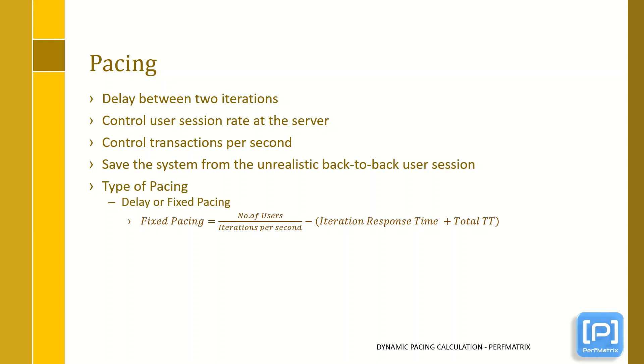The second type of pacing is interval or dynamic pacing. Practically, we cannot calculate dynamic pacing directly due to its varying nature. Hence, we calculate the required time taken by an iteration to complete. The calculated value needs to be provided in the performance testing tool, and the task of the tool is to automatically adjust the pacing or delay by subtracting the defined time from iteration execution time.